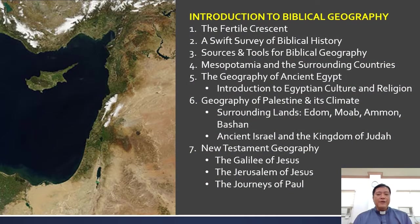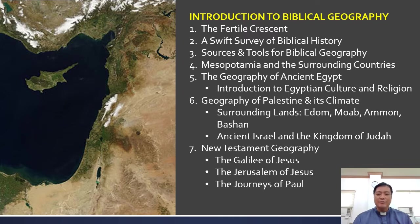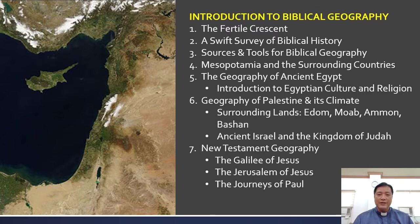I have given you already the outline of our course, and in that outline we see that it's divided into five phases. There are some parts that are longer than the others, but this is one major part, the first one, the introduction to Biblical geography. What we will study today is about the Fertile Crescent, and then a swift survey of Biblical history.